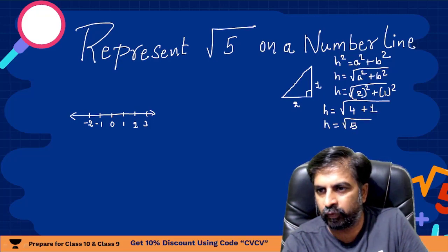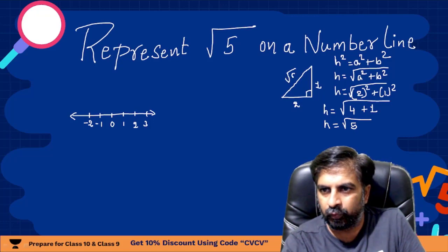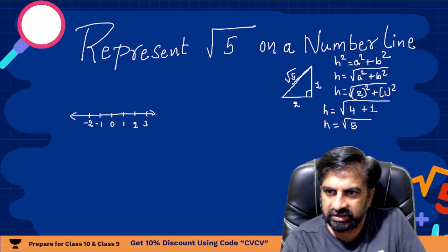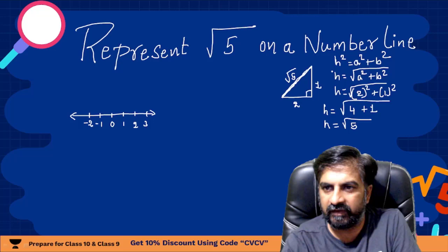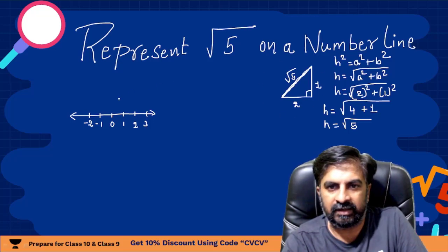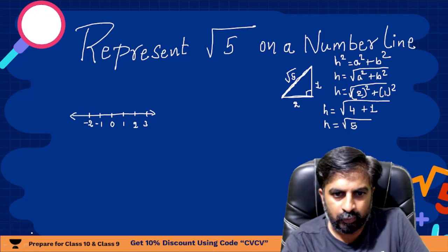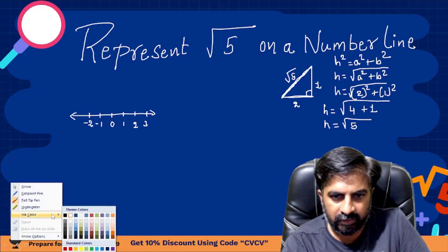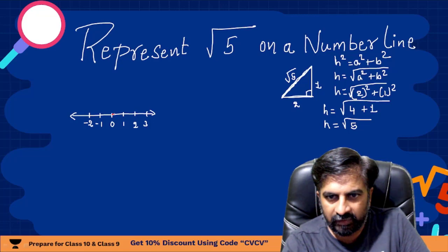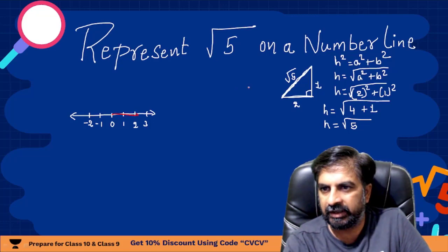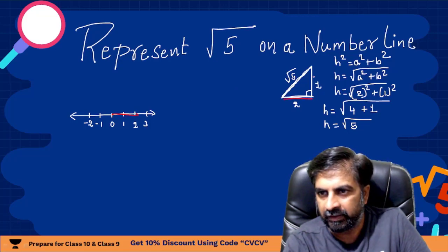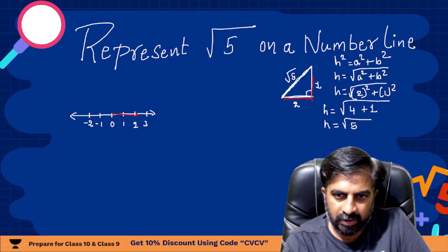So this value will be root 5. Now this distance is root 5, so we need to make this right angle triangle here. You can see the base is 2 here. Let me use some another color so that will be easy for you to understand. Now first we will make 1 and 2 centimeter because this was also 2 unit.